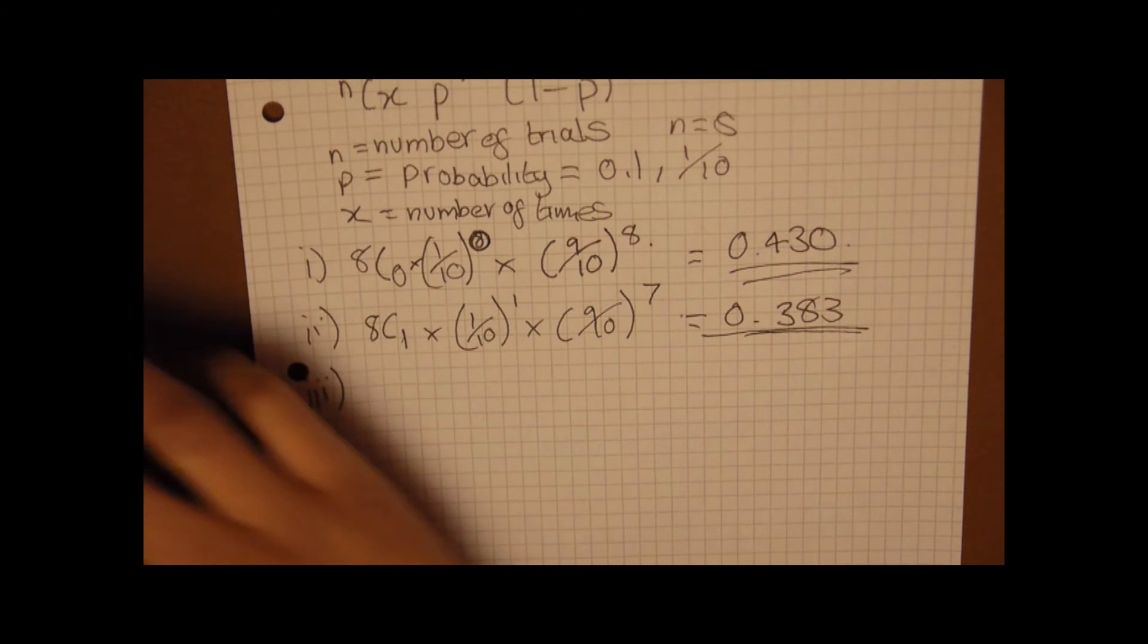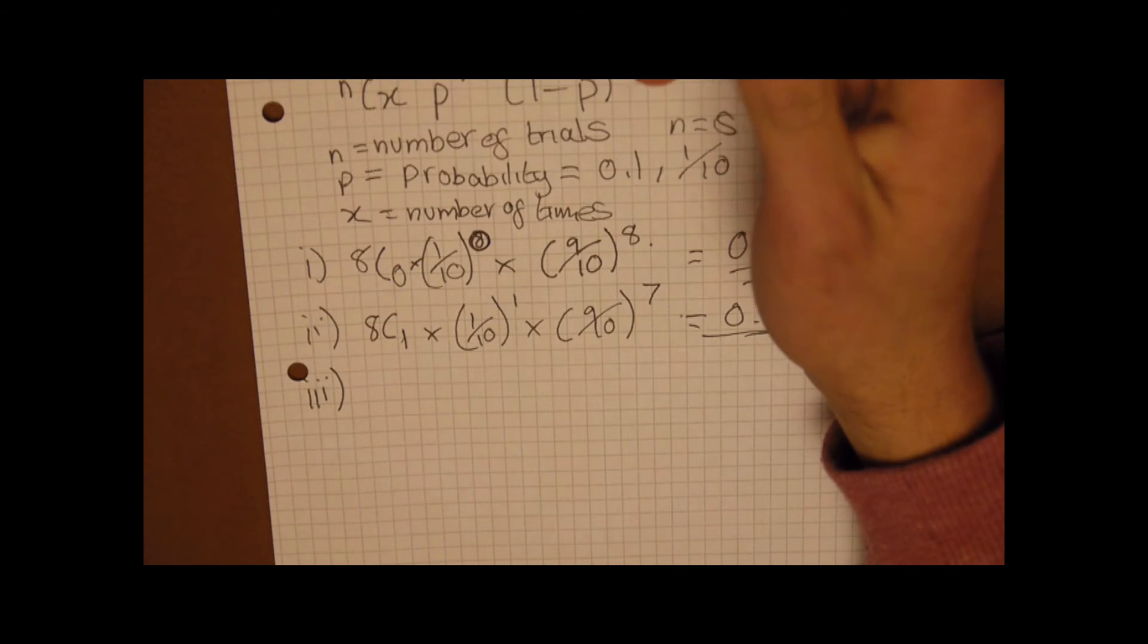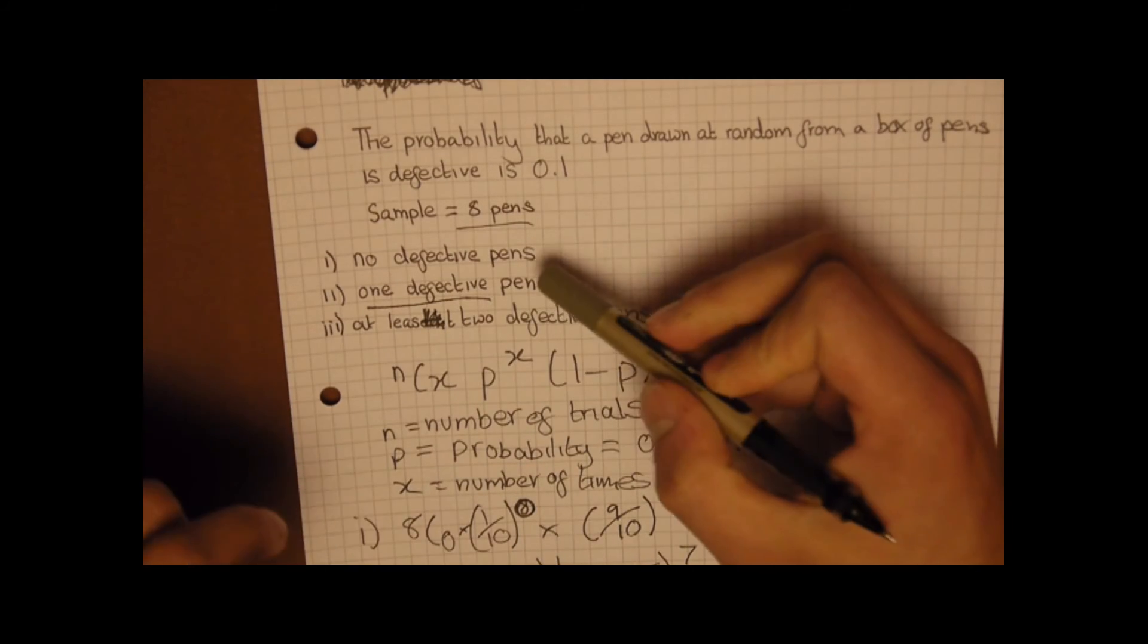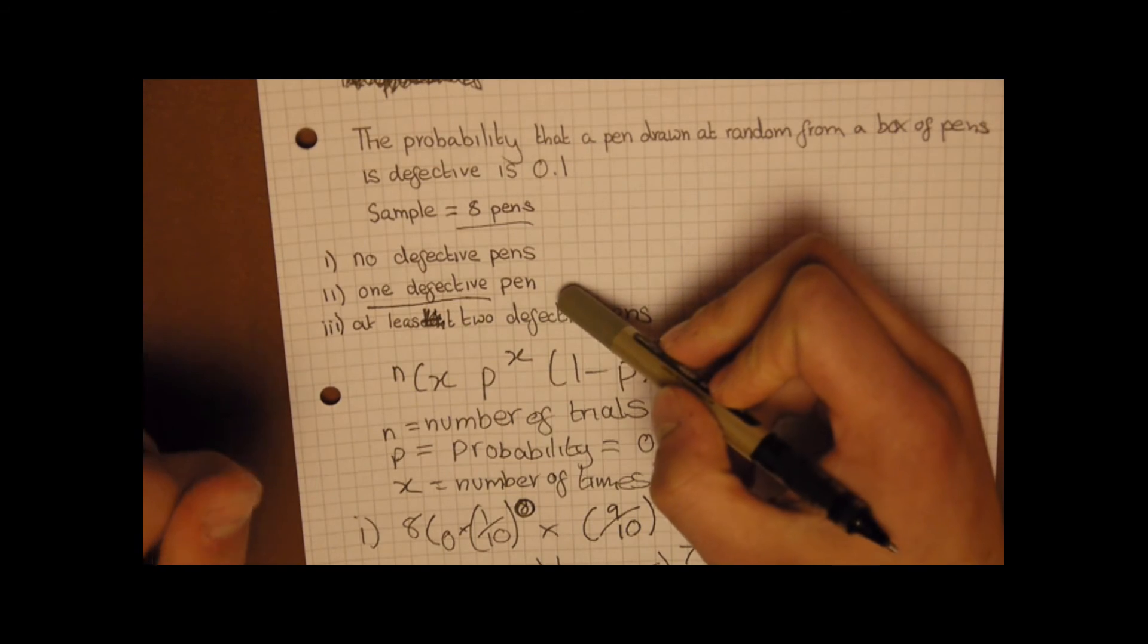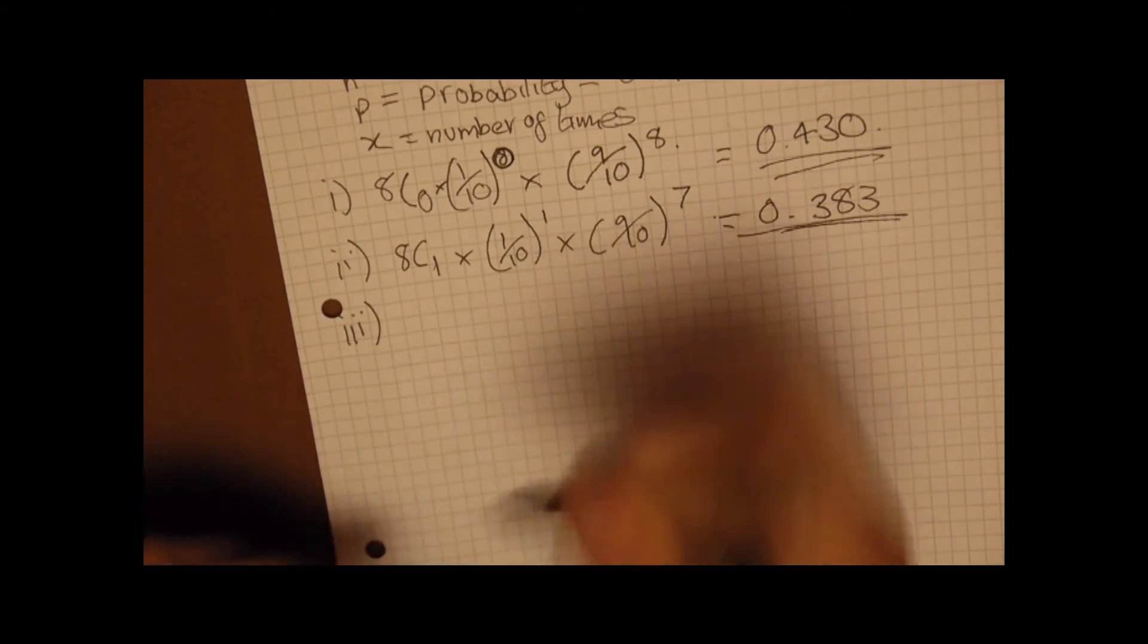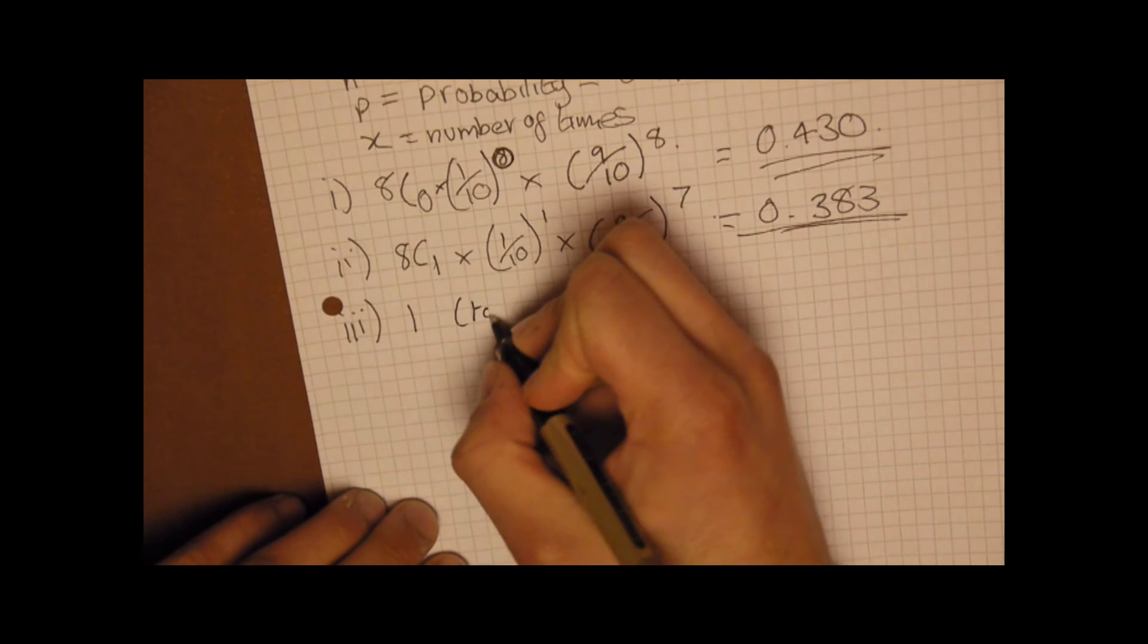Because we know the answer for no defective pens and we know the answer for 1 defective pen, what we can do is we can just use 1, which is total probability.